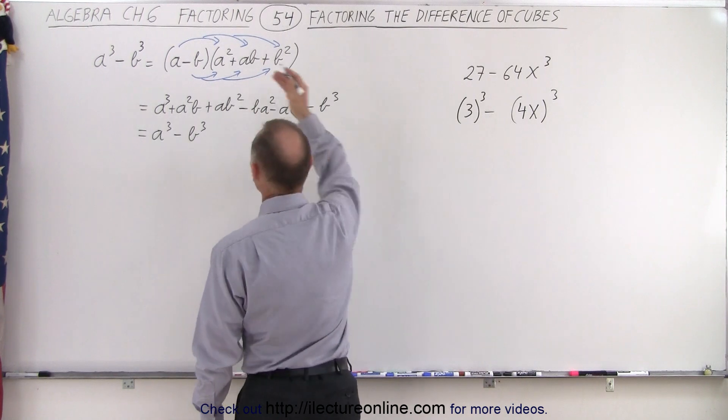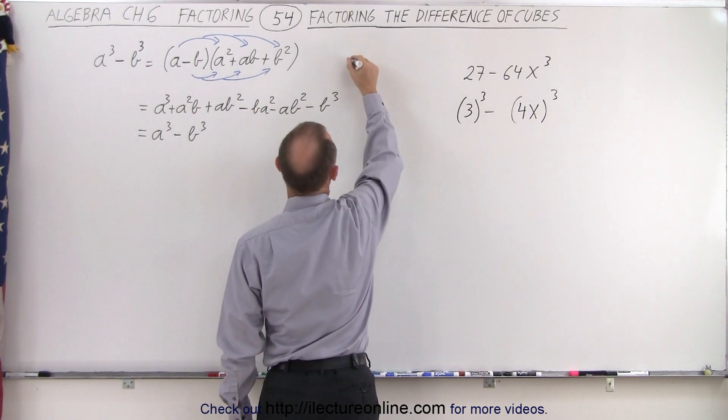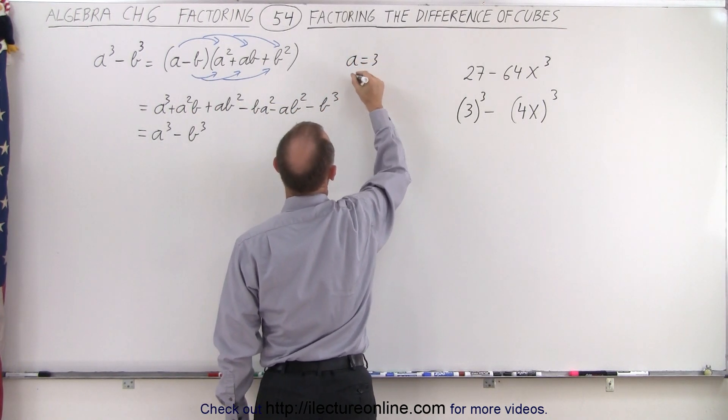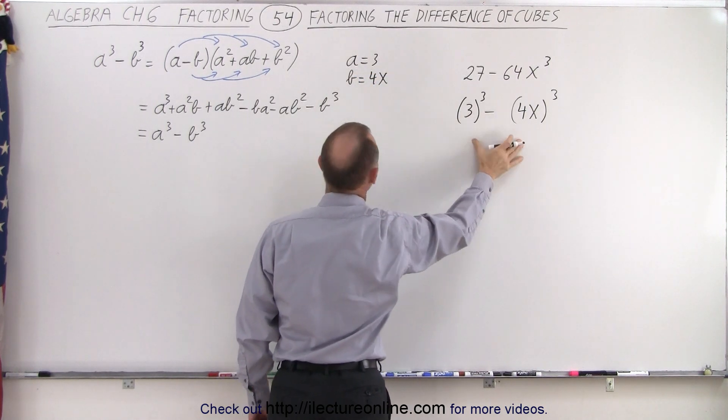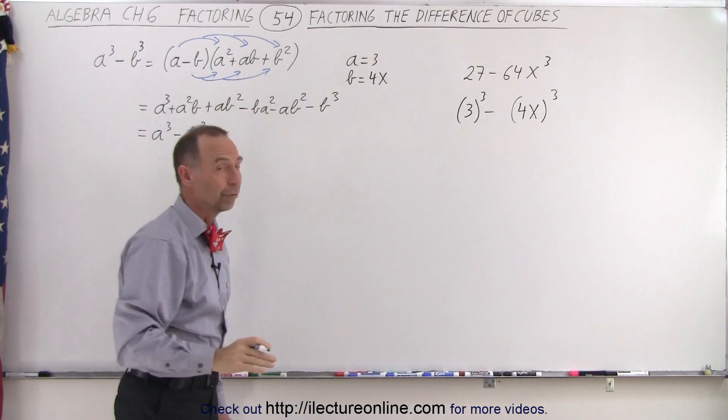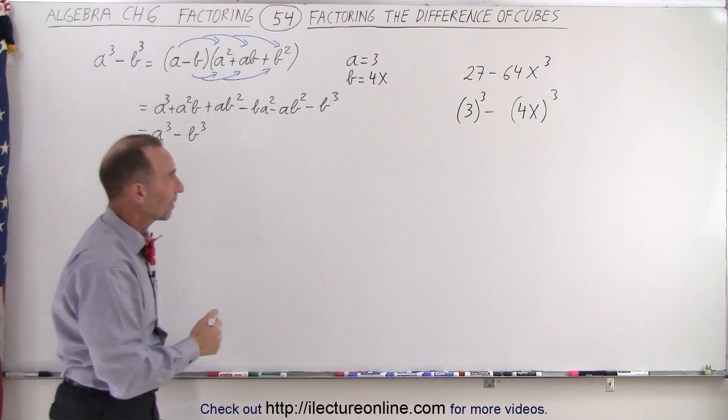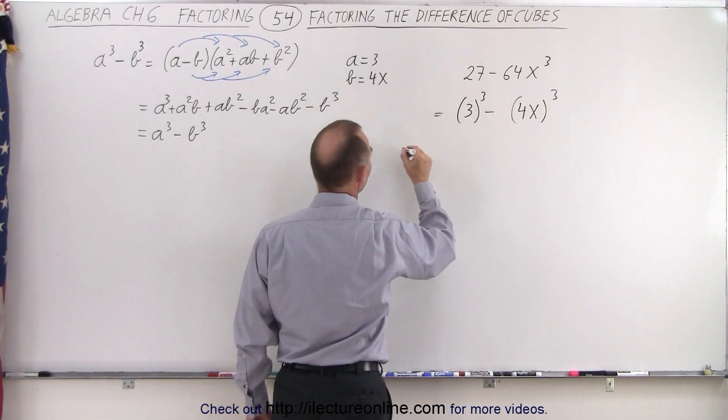Now, when we then make a comparison, if we let a equals 3 and b equals 4x, then all we have to do is substitute that into our general formula for the form of the difference of cubes, and then we can factor that. So let's go ahead and do that.